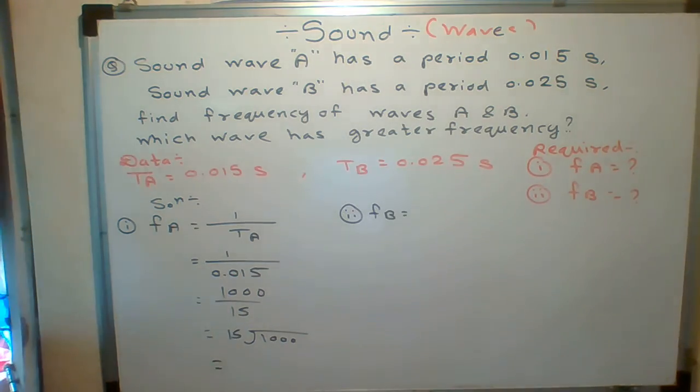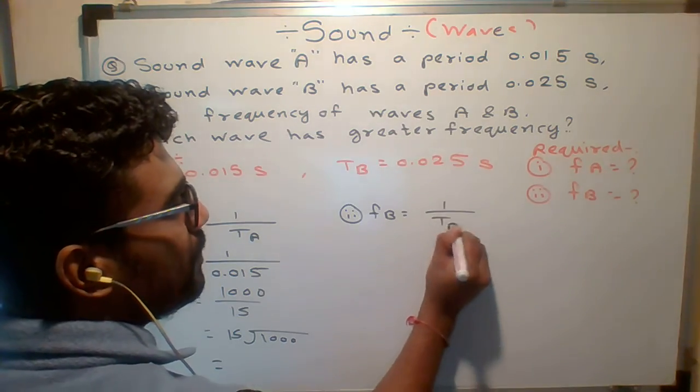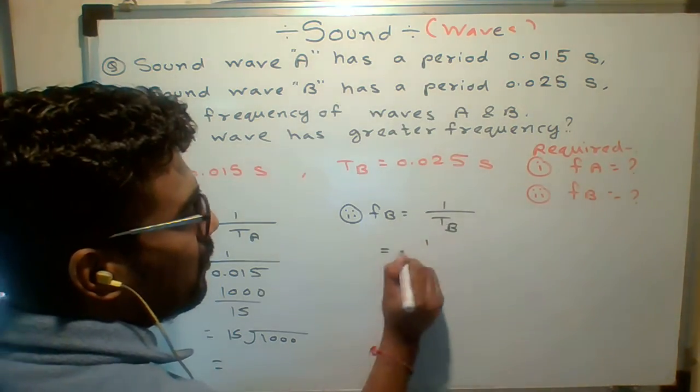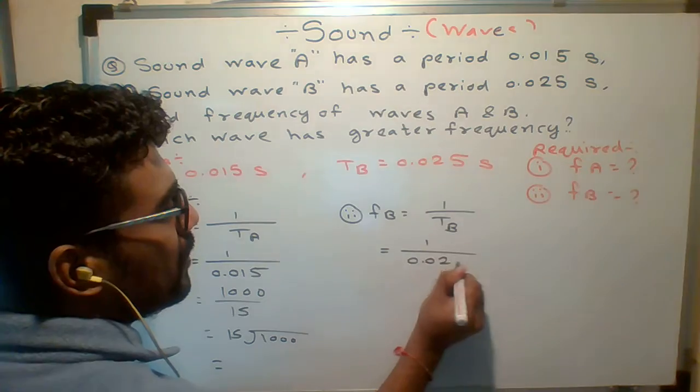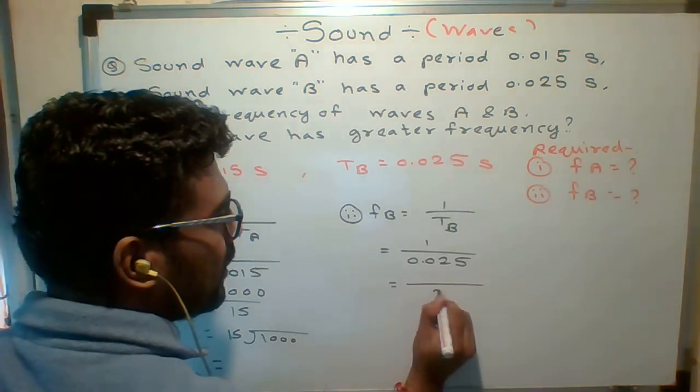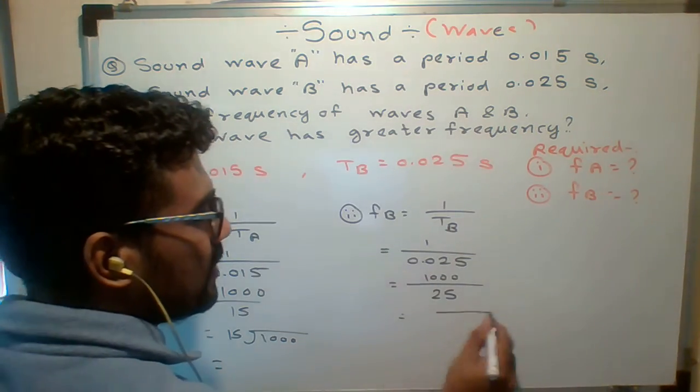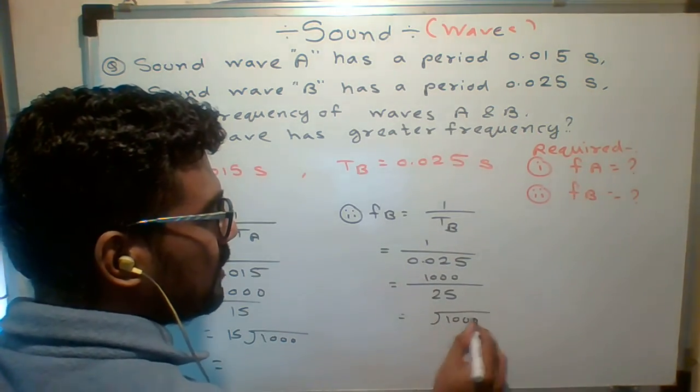Okay, tell me the answer. And similarly, what is frequency of B? 1 upon period of B, which is 0.025. Here also I will shift points by three positions. So I have 25, I have 1-2-3 thousand, and just divide thousand divided by 25.